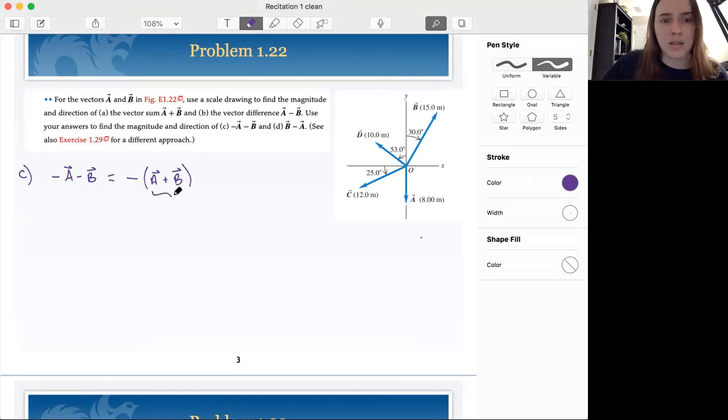So this is our answer from part A, which means that the component notation, so A plus B in part A was 7.5 i-hat plus 5.0 j-hat meters. Don't forget your units.